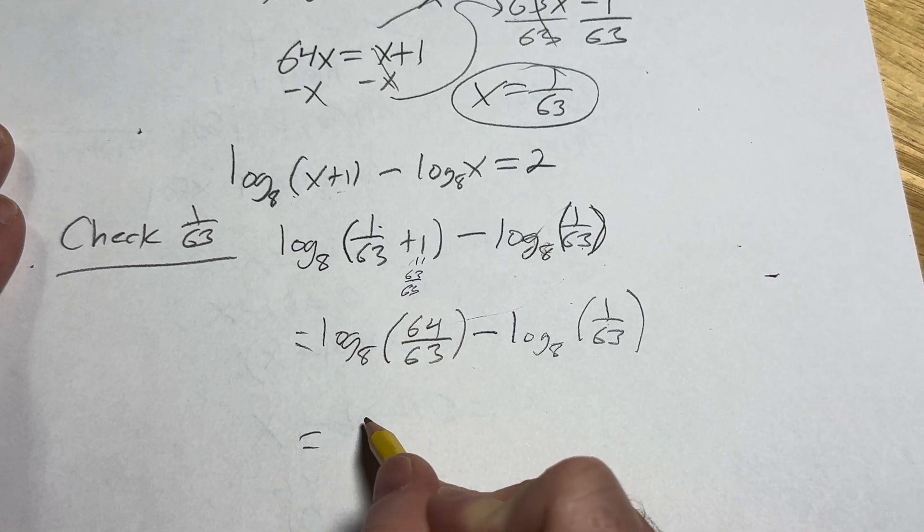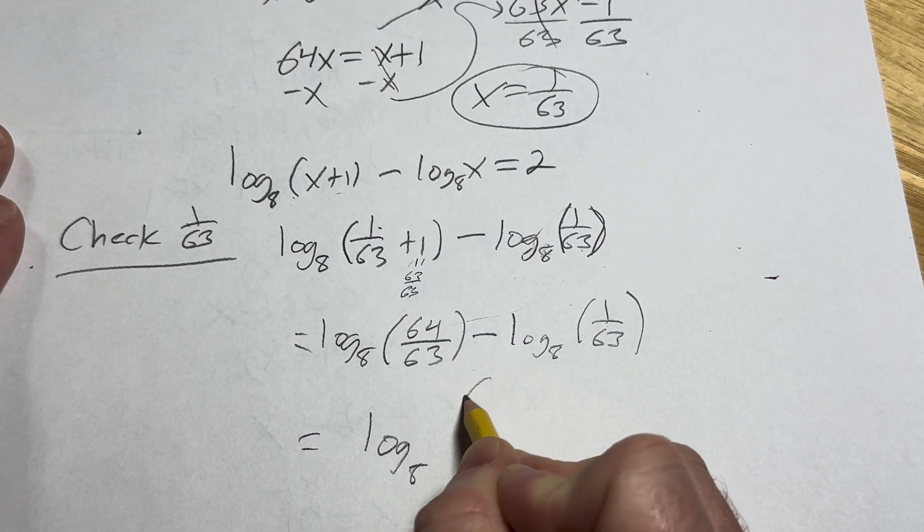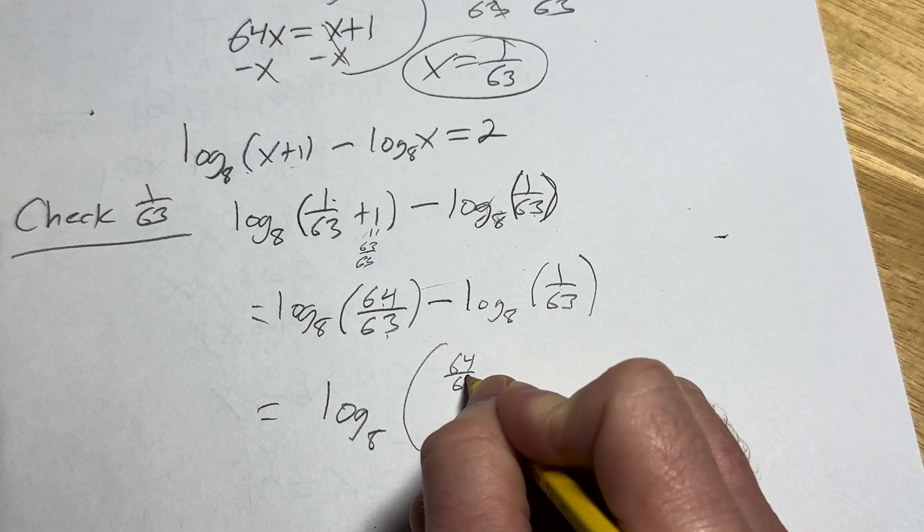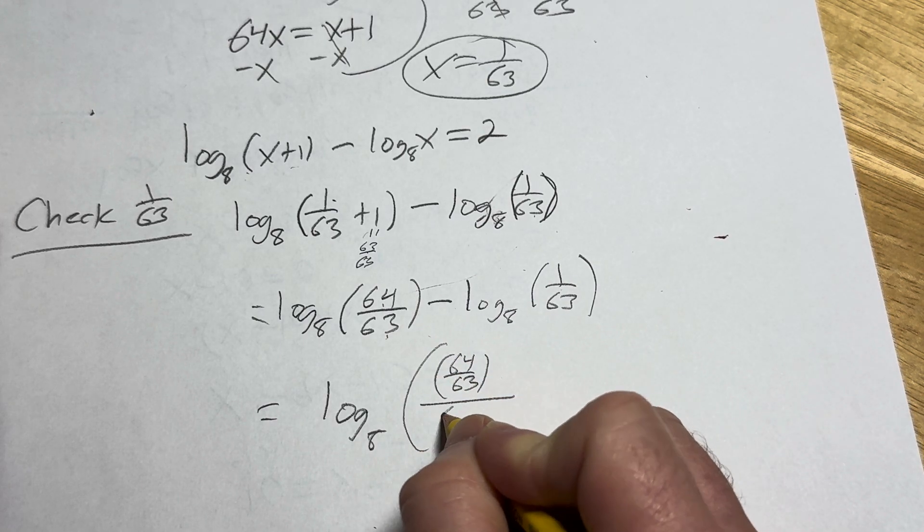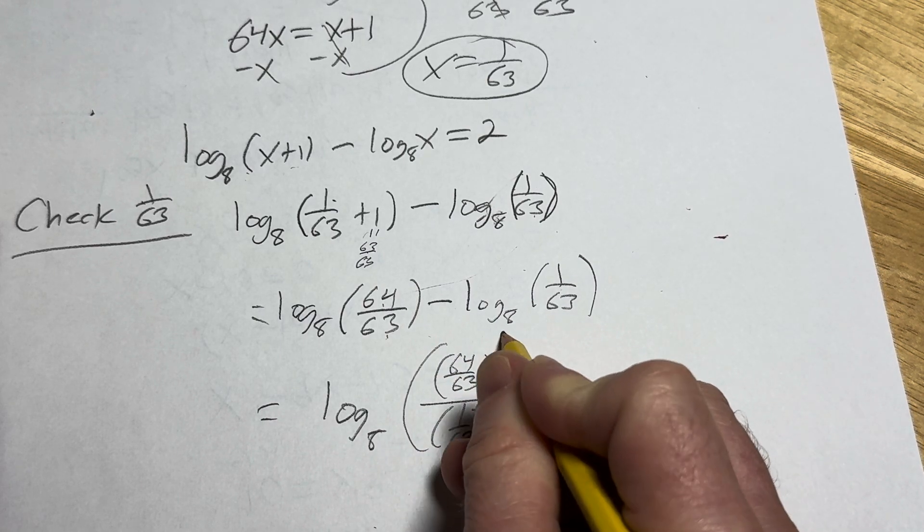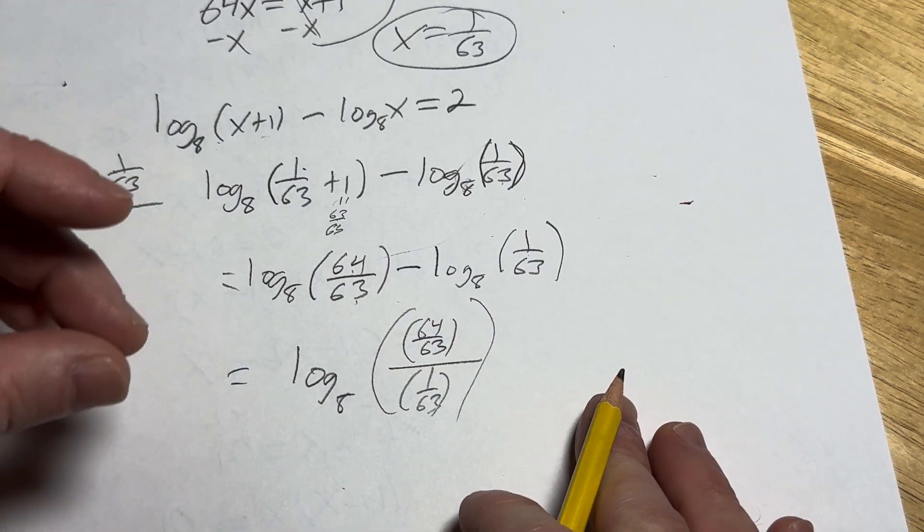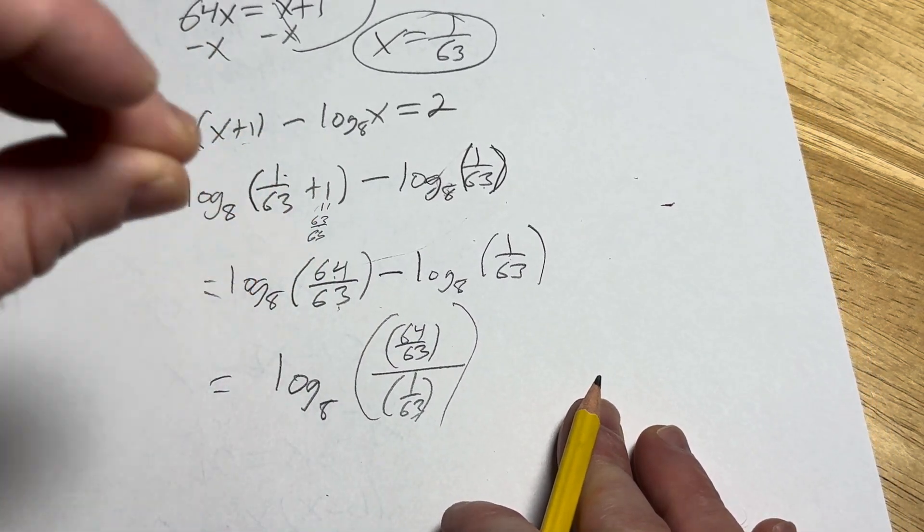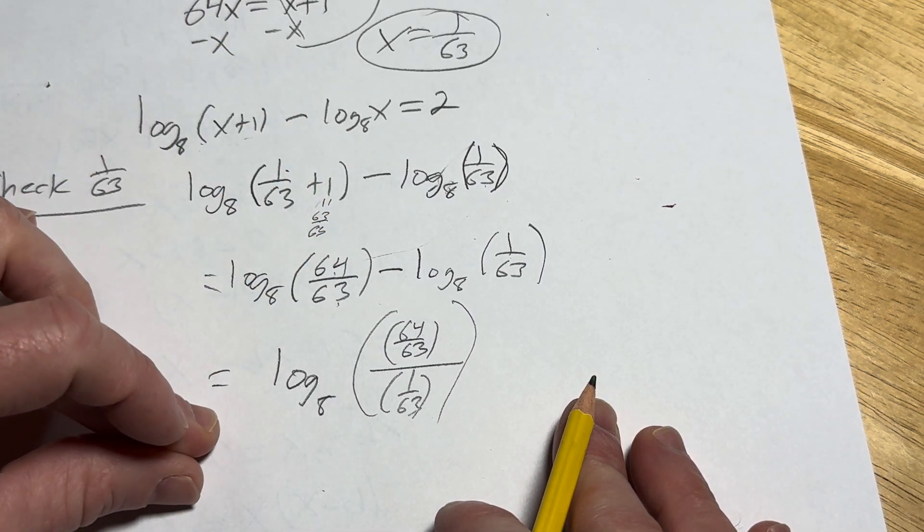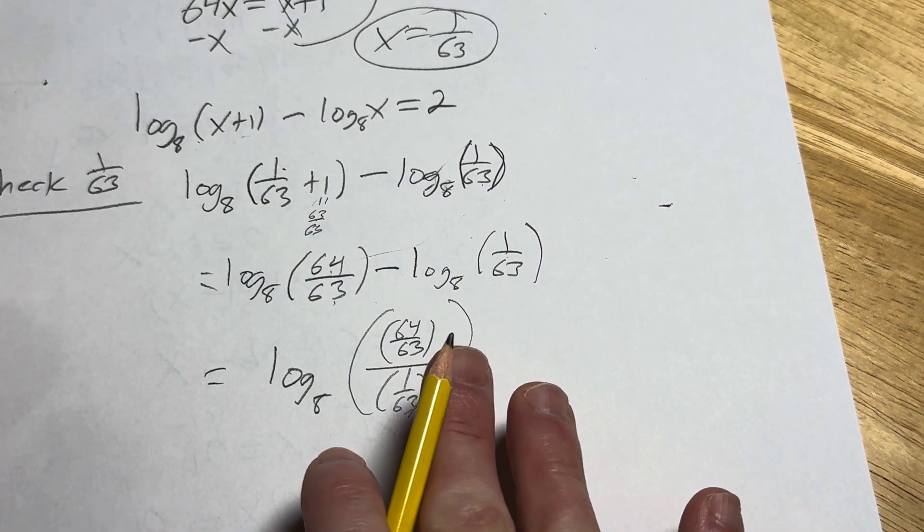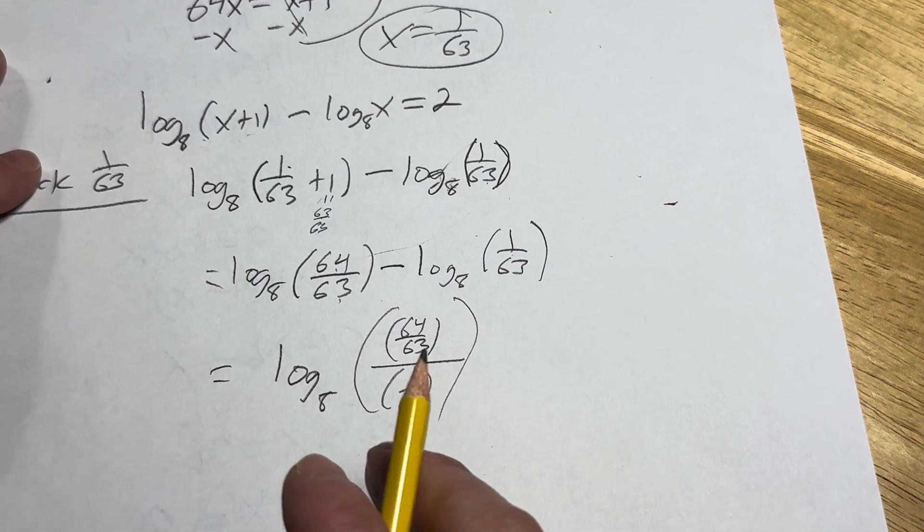So this is equal to log base 8. So 64 over 63, I'm going to put it in parentheses, over 1 over 63. The parentheses are really important because you have fractions. So it's really important to be clear what's being divided, right? You're taking the quantity or the number, the fraction 64 over 63, and you're dividing it by the number 1 over 63. So it's very important to have that, right? To have those parentheses.